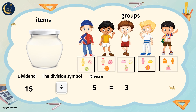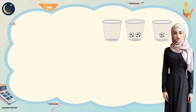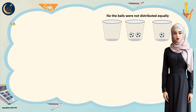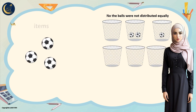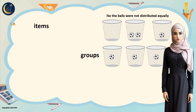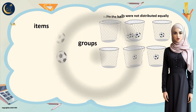Look at these balls — are they distributed equally? In the first basket there is one ball, in the second there are two balls, and the third basket has no balls. So no, the balls were not distributed equally. We have three balls and three baskets. The balls represent the items and the baskets represent the groups. Let's put one ball in each basket — now all items are distributed equally.